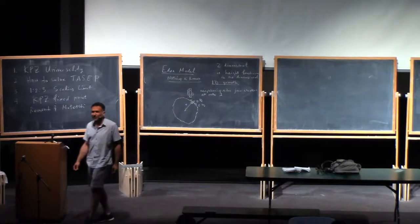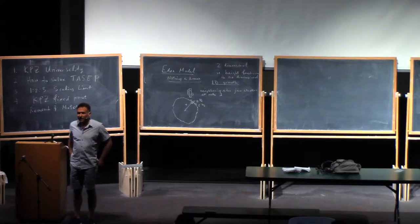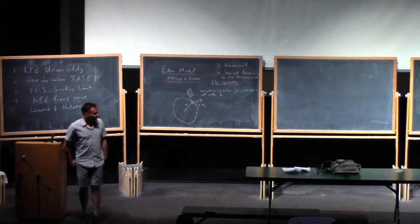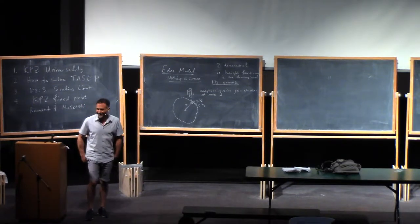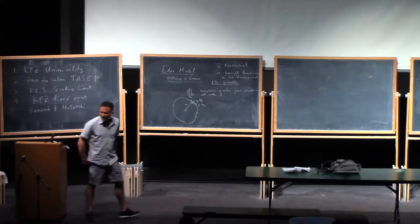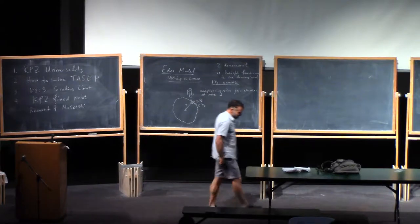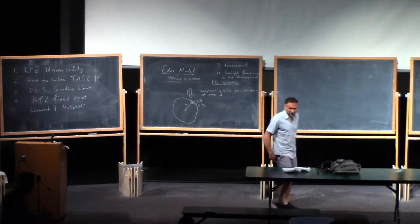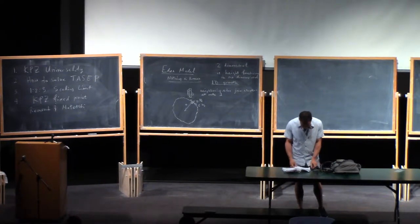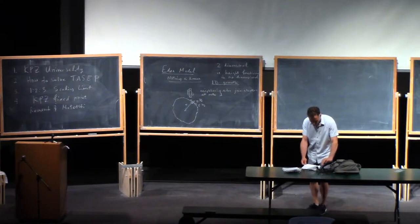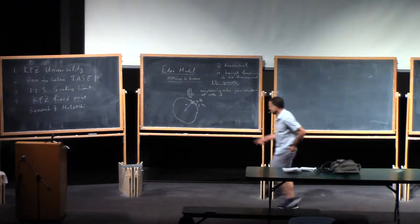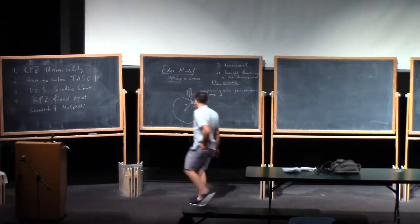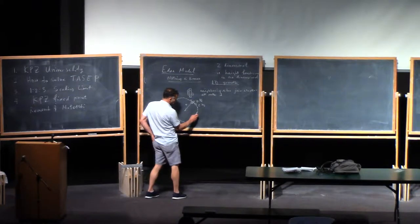How do you know it's in the KPZ universality class? You don't — maybe it is, maybe it isn't. There's some question about what exactly the KPZ universality class is. One of the problems with a model like this is that if you look on the boundary, it's not even a function — it could easily overhang.